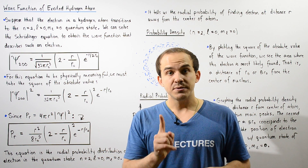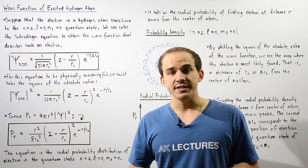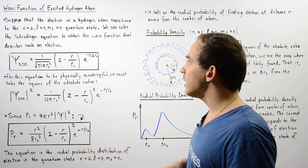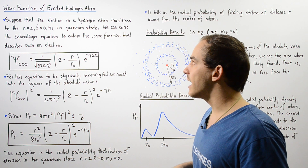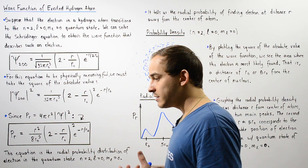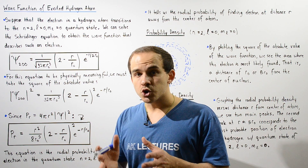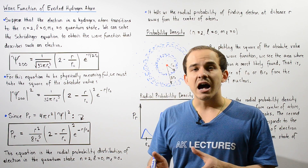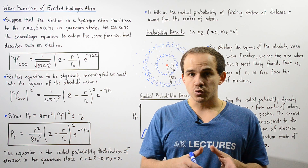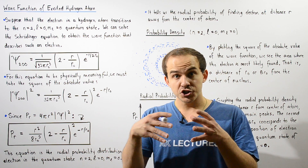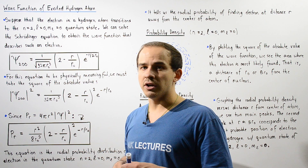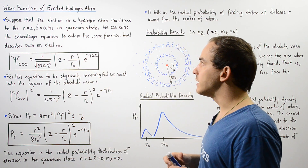Now what about the shape, size, and orientation of the electron cloud produced by the electron within this excited state? To answer this question, we have to take Schrödinger's equation and solve it for the wave function that describes the behavior, shape, and size of this particular electron within this quantum state.